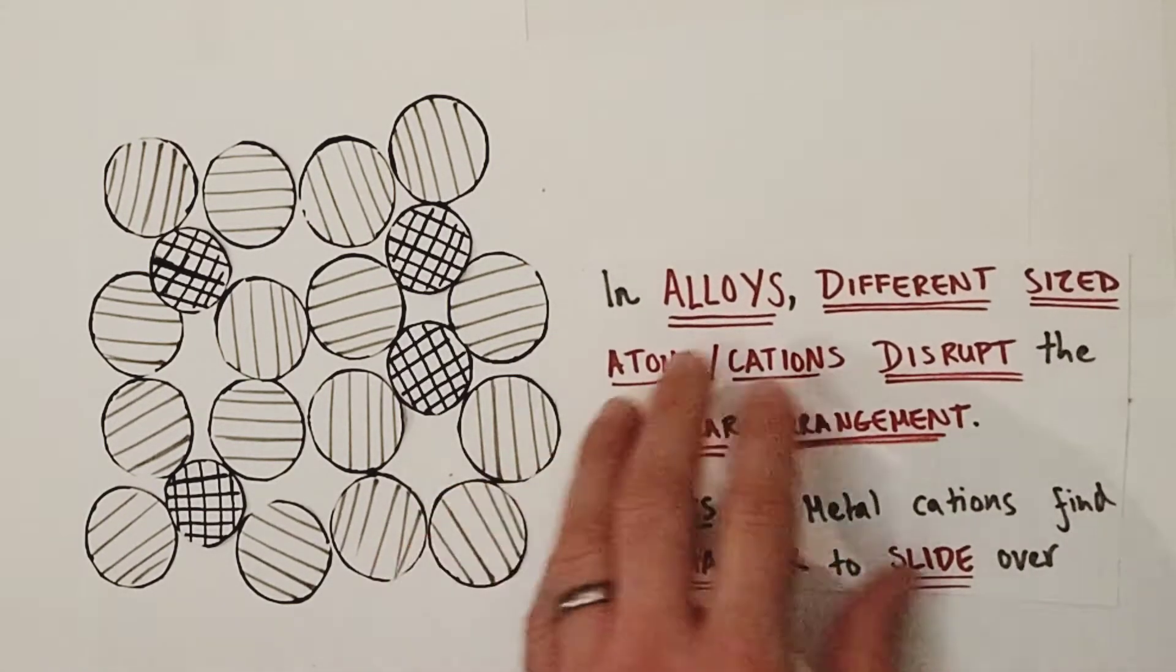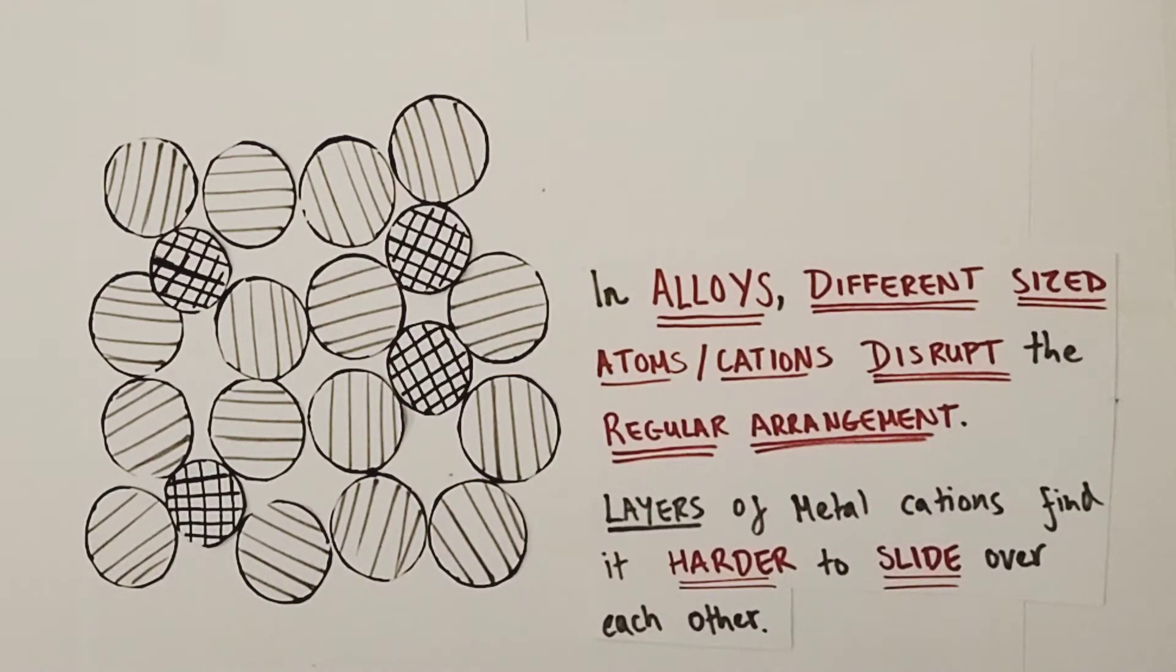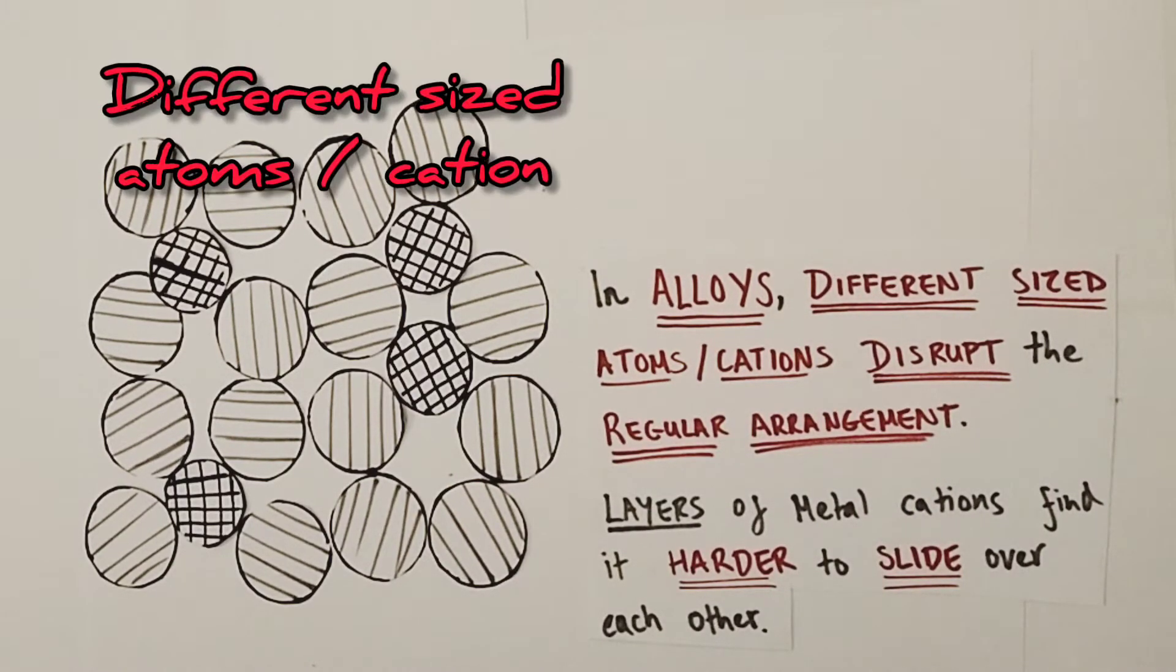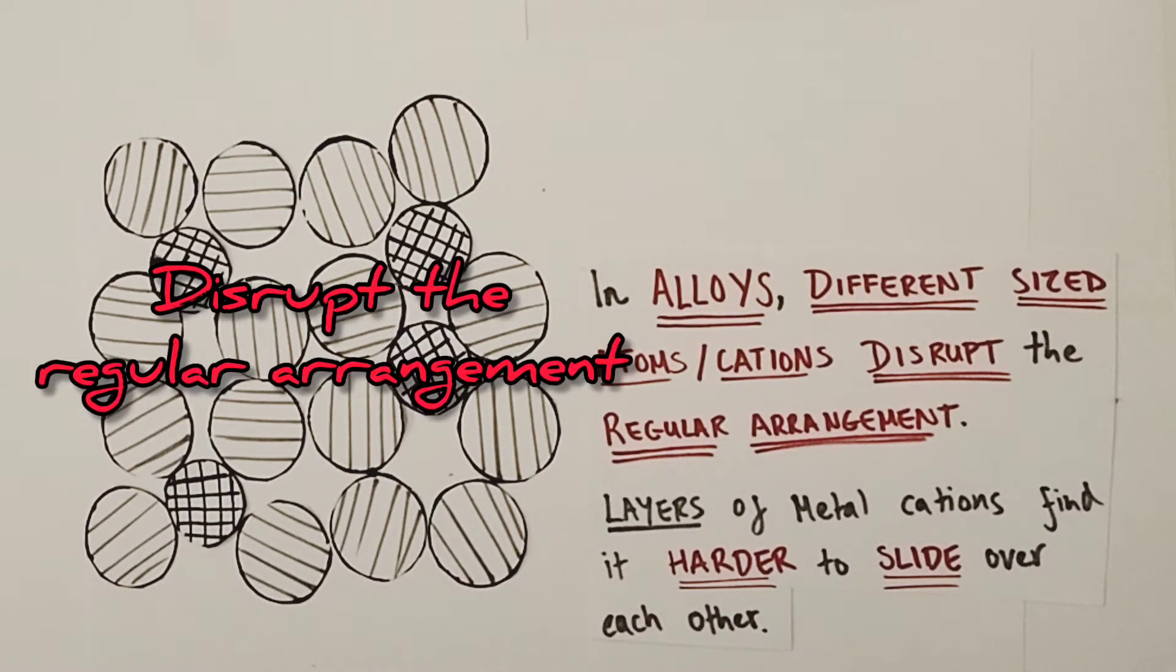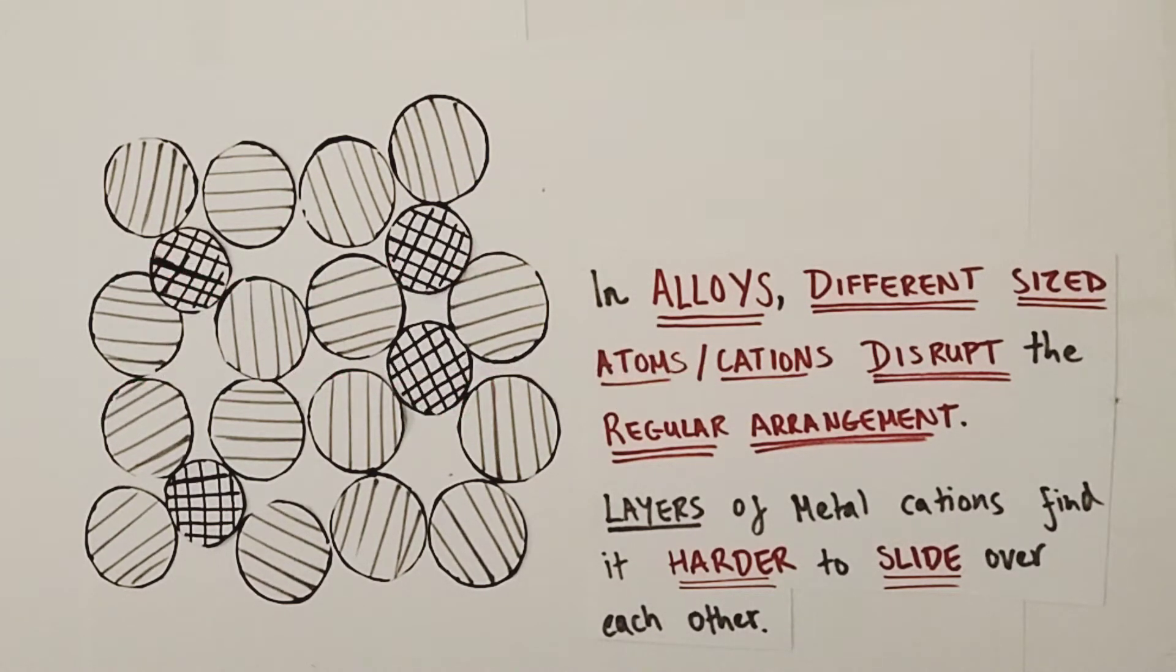So what we find is in alloys, different sized atoms or metal cations will disrupt the regular arrangement of that lattice structure.